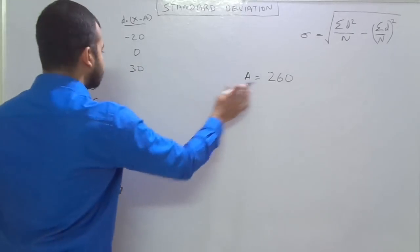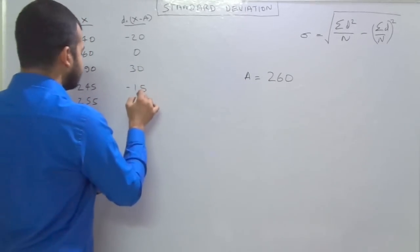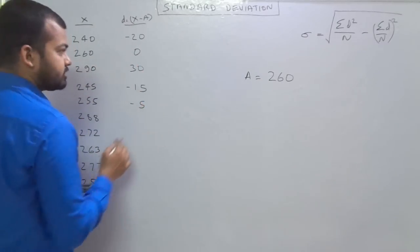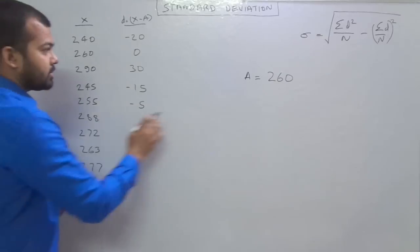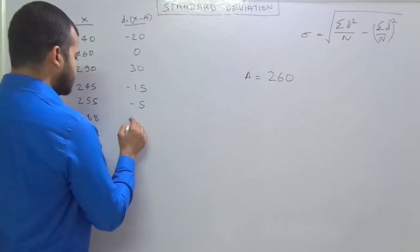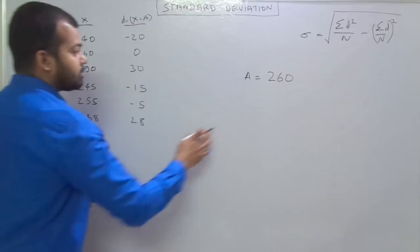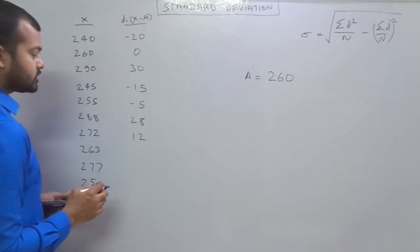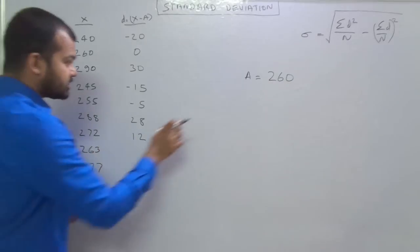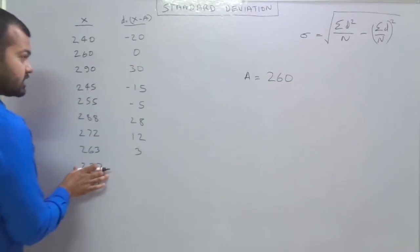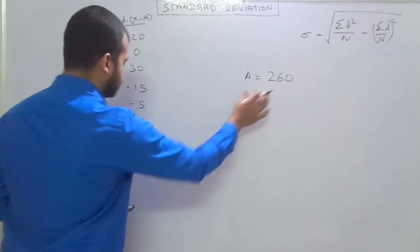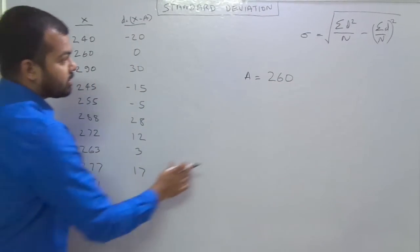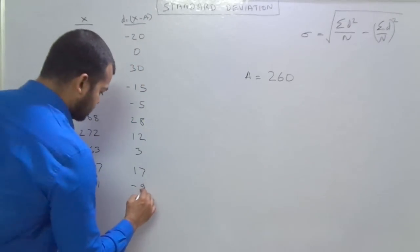245 minus 260 is minus 15. 255 minus 260 is minus 5. 288 minus 260 is 28. 272 minus 260 is 12, that is a positive value. 263 minus 260 is 3. 277 minus 260 is 17. Then 251 minus 260 is minus 9.